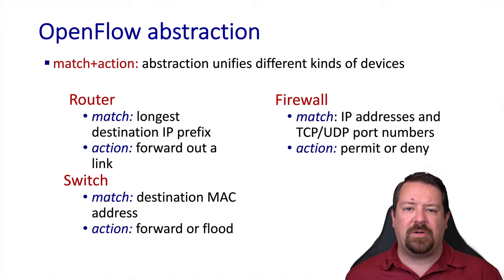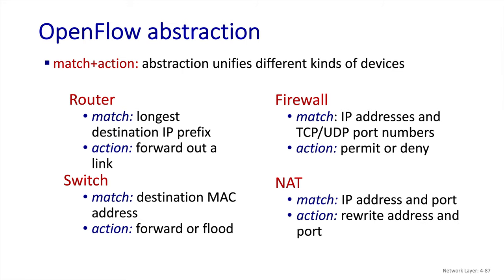Another very common device is the firewall, which makes permit or deny decisions based on various header fields. And as we saw, this can also be performed with the OpenFlow switch. Lastly, we have network address translation, which we've already looked at in some detail. And again, the SDN switch can perform this matching and rewrite the necessary fields in the header to behave as a NAT.